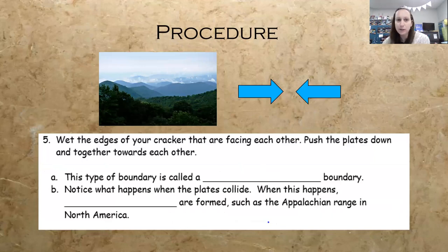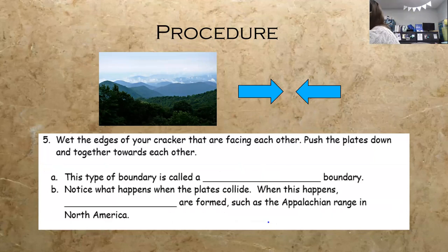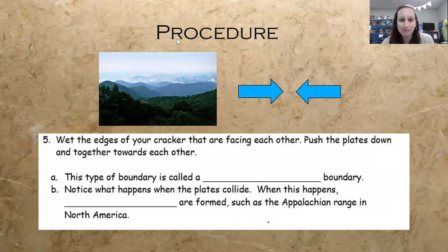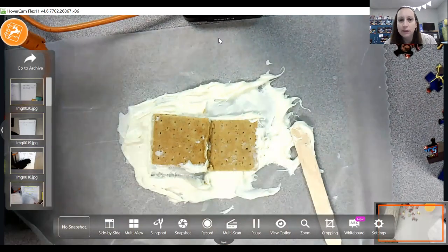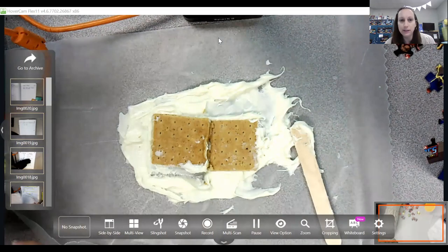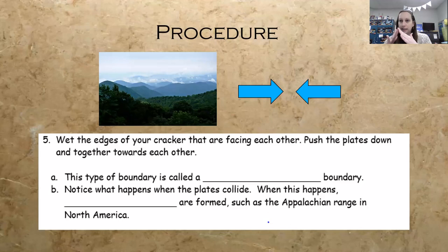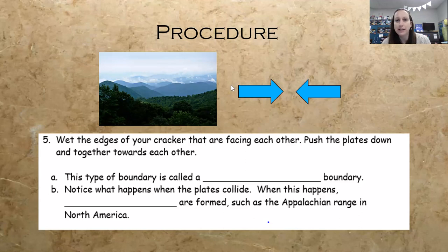Now we get to the part where we need the water. Wet the edges of the crackers that are facing each other — this is why you wash your hands when done, as you get icing on your fingers. Push down and pull them together, and you get a formation of something new. This is a convergent plate boundary. When the plates collide, mountains are formed, such as the Appalachian Range in North America. Also, subduction is when one plate goes under the other, and you get something like an ocean trench.